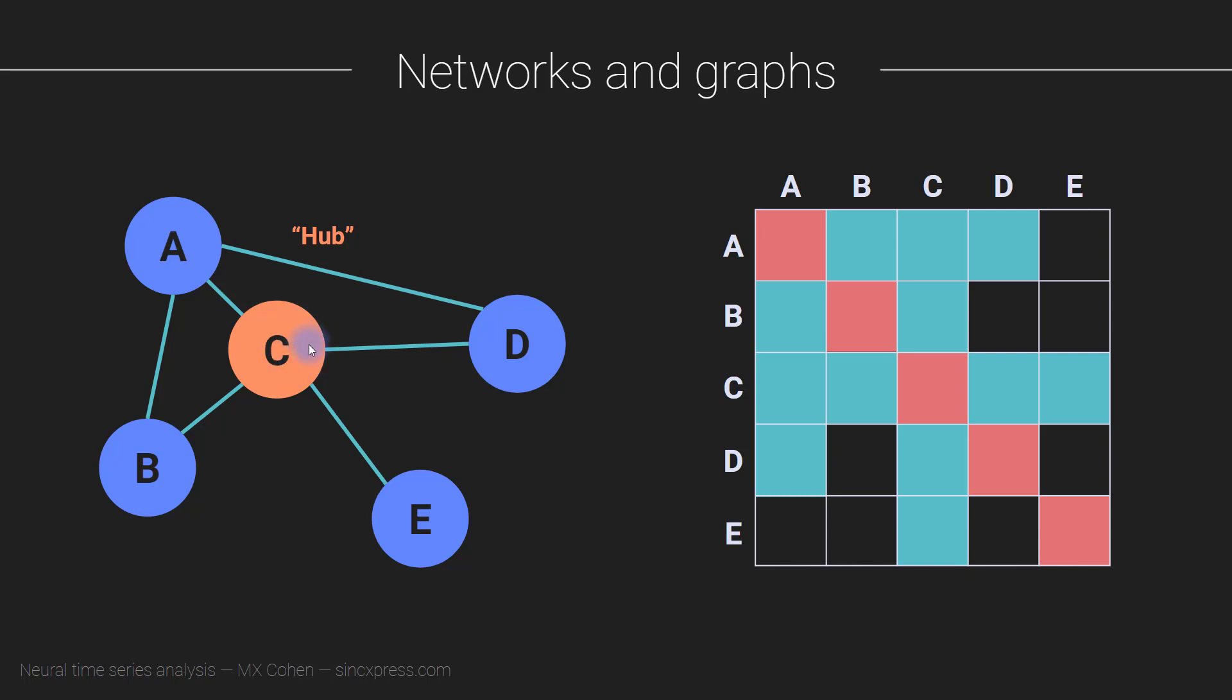C is a really important place in this network. If you knocked out node E, it may not be so bad for overall functioning, but if you knocked out C, that would be much worse because many of these other nodes can connect to each other only indirectly via C.